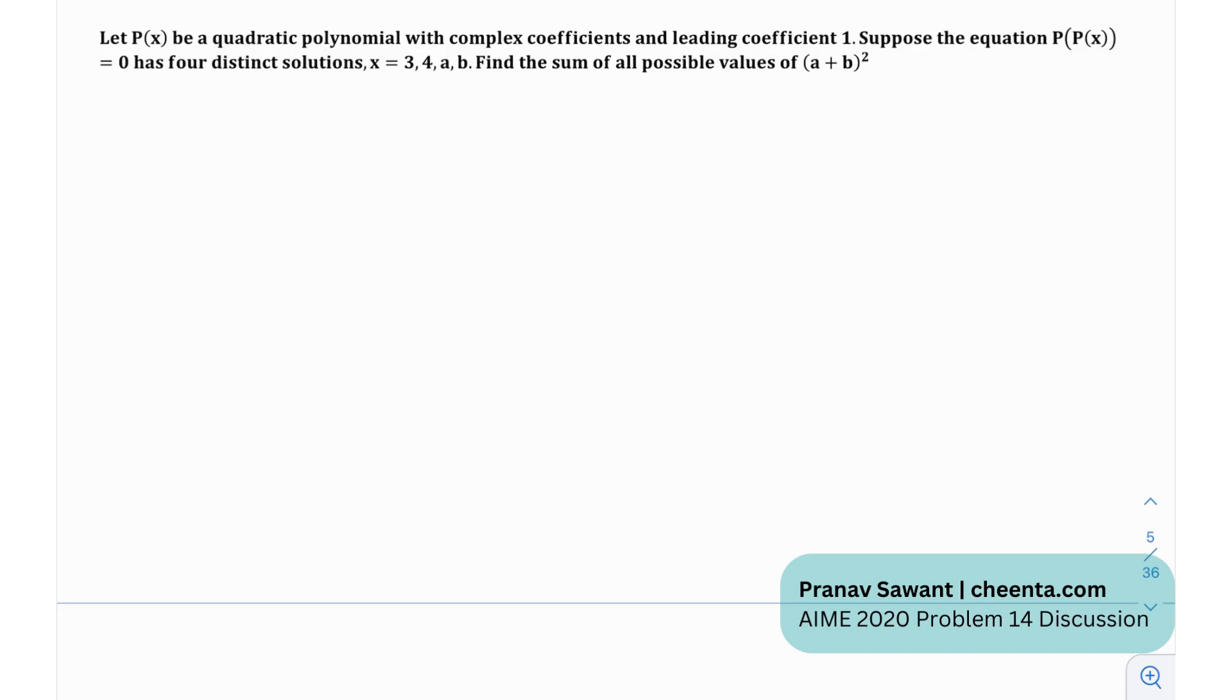And suppose that the equation p of p of x equals 0 has four distinct solutions: 3, 4, a, and b. They want us to find the sum of all possible values of a plus b whole squared.